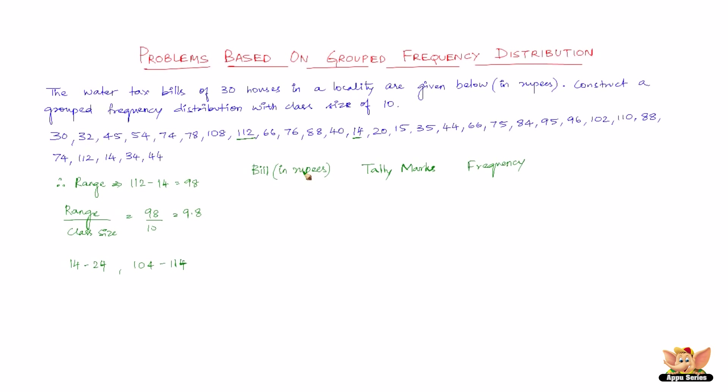In grouped frequency distribution, we group the variate such as this. The first one being 14 to 24 because the class size is 10. Next one is 24 to 34, then 34 to 44, then 44 to 54, then 54 to 64, then 74 to 84, then 84 to 94, then 94 to 104, then finally the last class 104 to 114. Now let us draw the table.